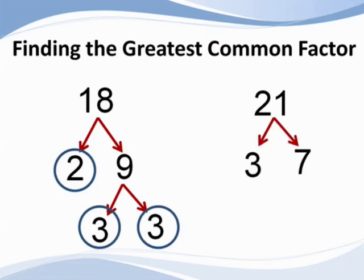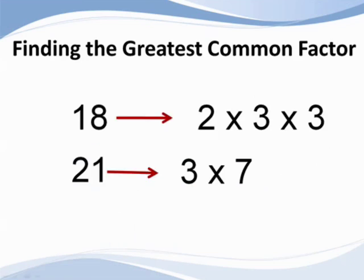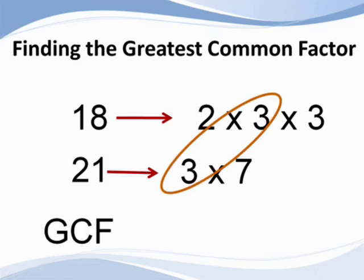Twenty-one is equal to three times seven, both of which are prime. Now, our job is to find those factors that are in common between those that multiply to be eighteen and those that are factors of twenty-one. Looking at the two lists, three is the only factor in common, so it is circled. The greatest common factor is three.